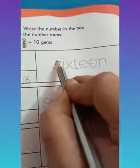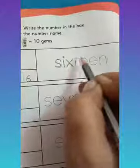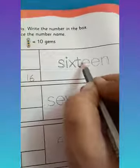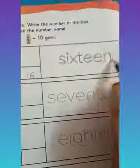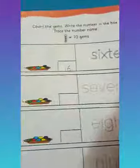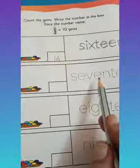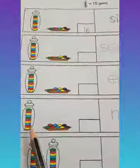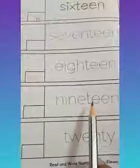And then here you are going to trace the spelling and say and write. S, I, X, T, E, E, N. 16. You have to repeat: S, I, X, T, E, E, N. 16. The same way you are going to count these, write the number, and trace the number name everywhere — count all the gems, write the number, say the number name, and trace it.